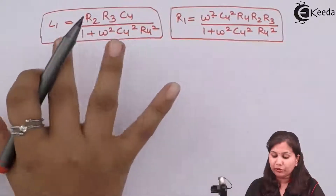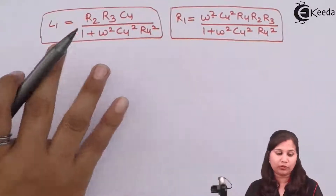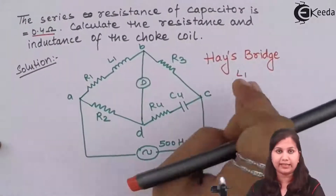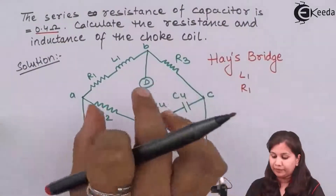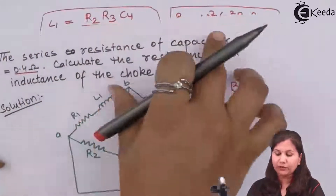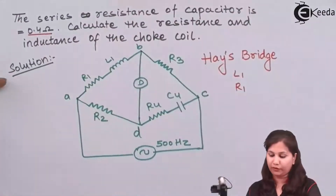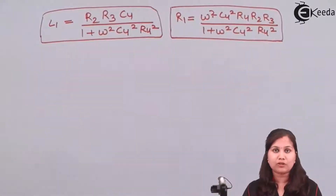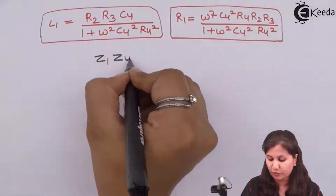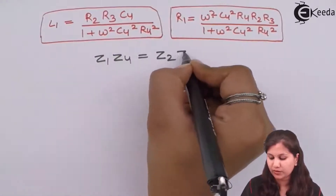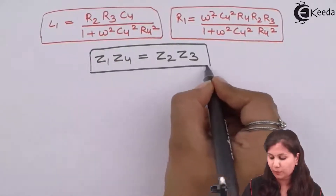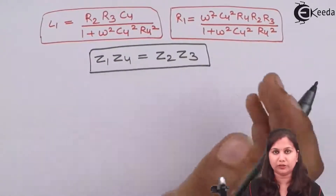But if we don't remember these values, or if we are not able to identify that this bridge is the Hays bridge, we can derive the balance equation. The balance equation of an AC bridge states that Z1·Z4 equals Z2·Z3 — that is, the product of the impedances of the opposite pairs of arms are equal.